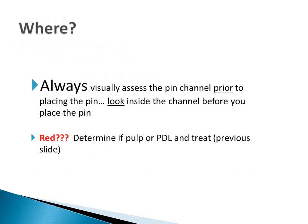After making your pin channel, visually assess the channel. If you see red, it is either in the pulp or the PDL. If you see red at the end of the channel, it is best to not place the pin. Avoid the situation by placing the pin at a line angle, 1 mm from the DEJ and dentin, and parallel to the nearest external surface of the tooth.